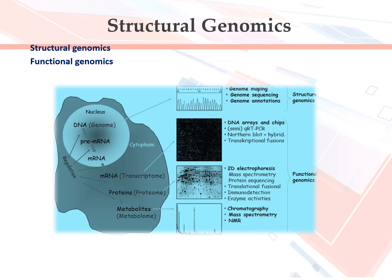Structural Genomics covers genome mapping, genome sequencing, and genome annotations. Functional genomics methods include DNA arrays and chips, semi-quantitative RT-PCR, northern blot hybridization, transcriptional fusions, 2D electrophoresis, mass spectrometry, protein sequencing, translational fusions, immunodetection, enzyme activities, chromatography, and NMR.